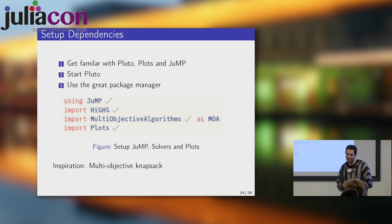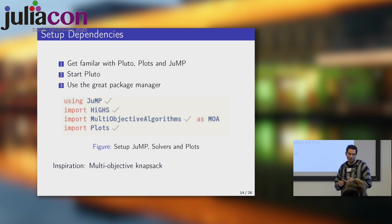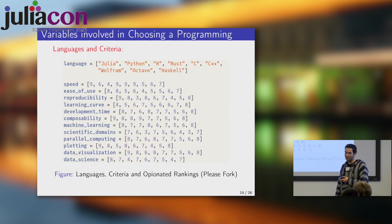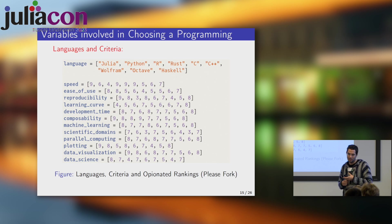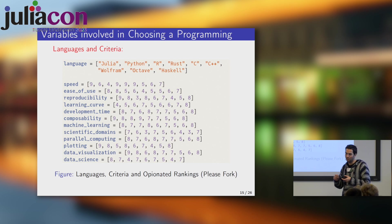We all know Pluto — it's great. You'll have the task, if you want, of copying these things from the slides, which are linked so you can copy and paste and work along. This is my rating of different programming languages: Julia, Python, R, C, Rust, Haskell. The criteria include speed, ease of use, reproducibility, learning curve, development time, composability, machine learning, scientific domains, parallel computing, plotting, data visualization, and data science. All of these numbers are my humble opinion.